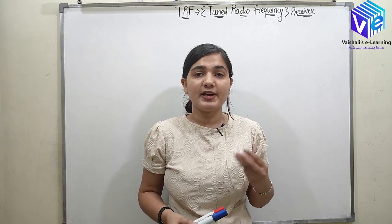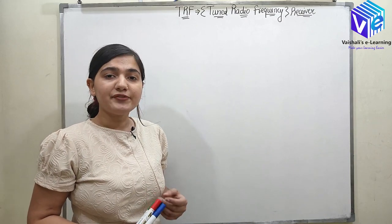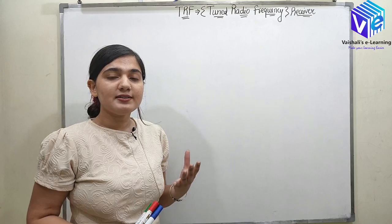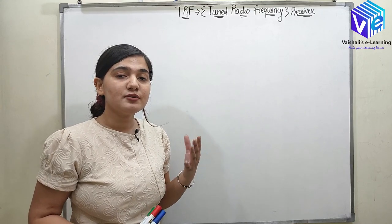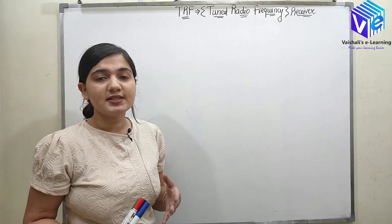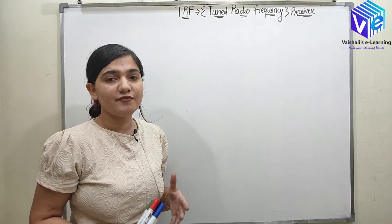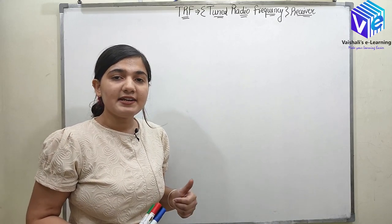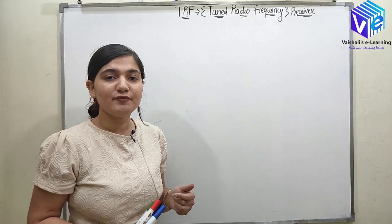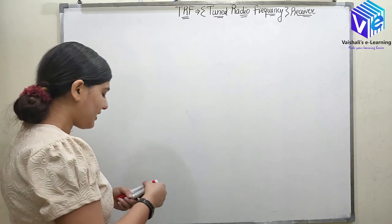If I talk about AM receivers, we have three types. First is the TRF receiver which we are discussing now. After that we have super heterodyne receivers, which was introduced during World War 1 and is very popular for university exams as well as competitive exams. The third type is PLL or phase lock loop, which is very efficient and widely used.